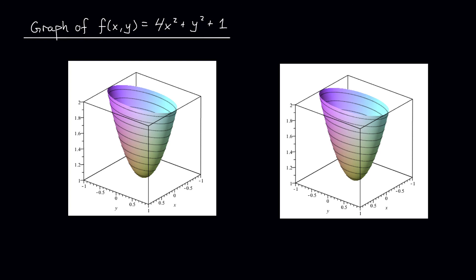If I set, say, y = k, that's what I get by slicing this graph along the y-axis. Well, that gives us the equation z = 4x² + k² + 1. Now remember, k is a constant. So this is the equation of a parabola. A long, skinny parabola in the xz plane.